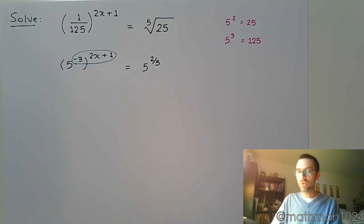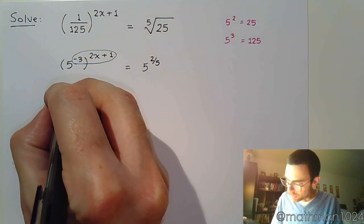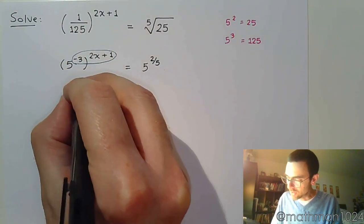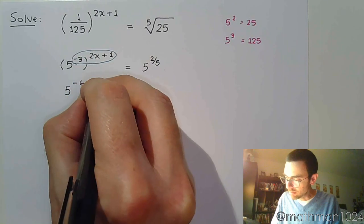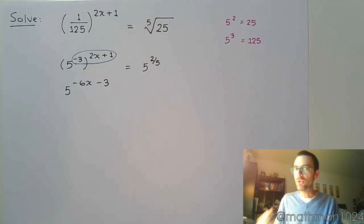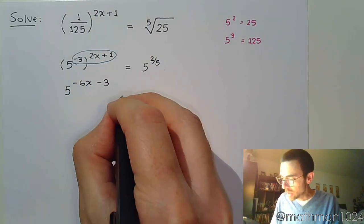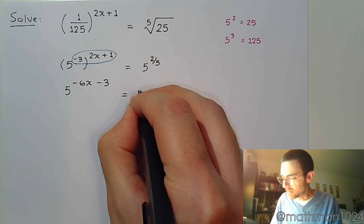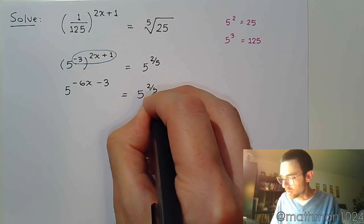So over here, as we've seen many times, a power raised to a power, so we need to multiply. That's 5 raised to the negative 6x minus 3. Make sure that you distribute correctly. On the right side, it's just 5 to the 2 fifths power.